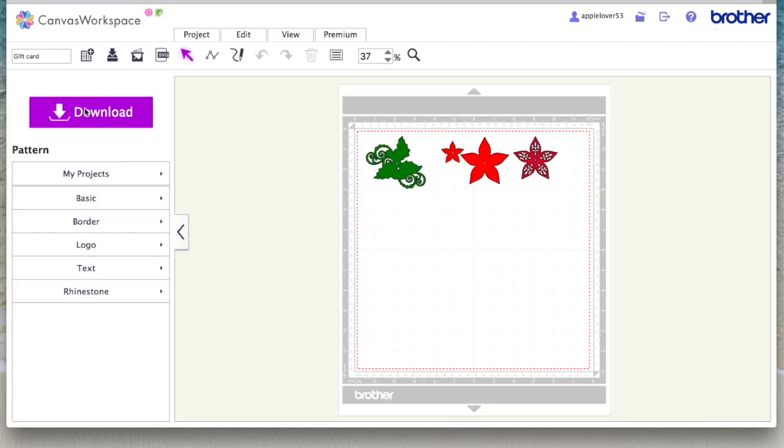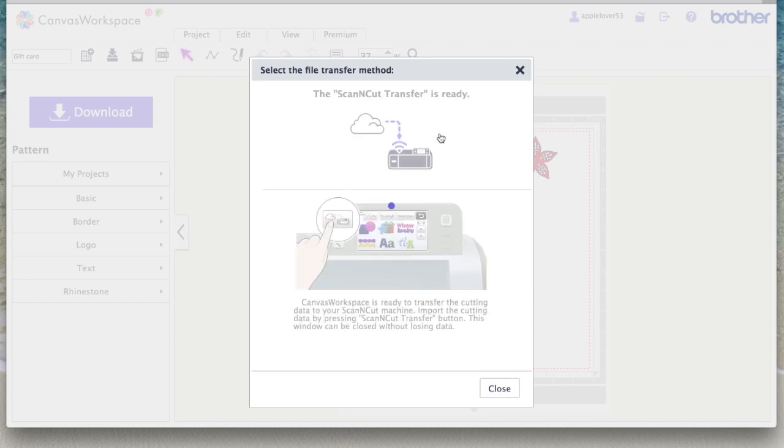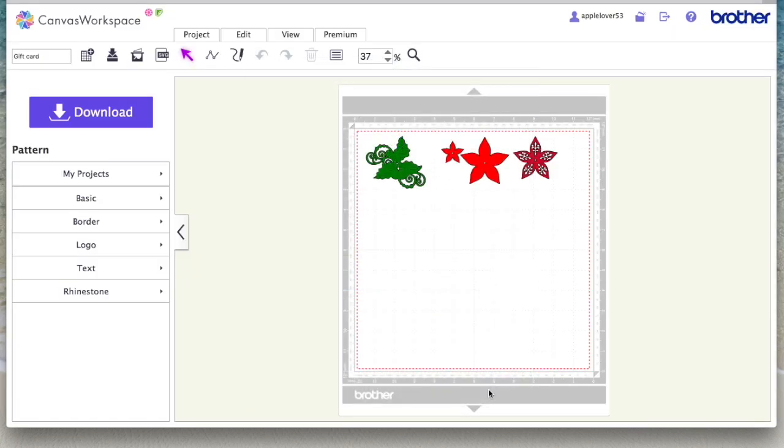Now I'm going to come to download and I'm going to send it over wirelessly to the machine. Then I'm going to click close and I can close that down now. I'm going to go to the machine, show you how to retrieve the file, and then show you how to put this project together with the gift card holder.